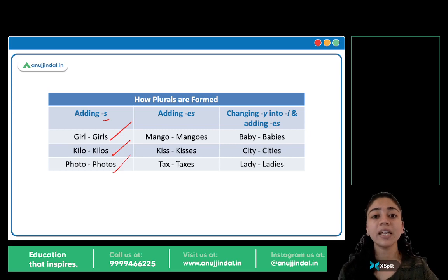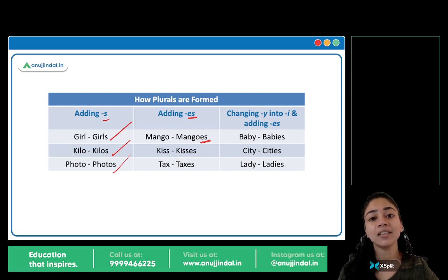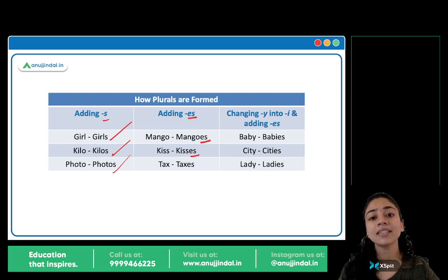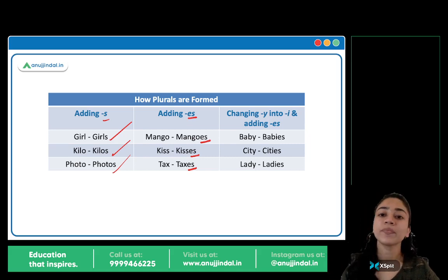In some cases, we add ES. Jaise mango → mangoes, ES add kar diya. Kiss → kisses, tax → taxes — we add ES to get the plural.